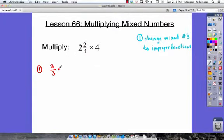And we're going to multiply that times 4 over 1, because 4 is the same thing as 4 over 1. We need to have a numerator and denominator when we multiply fractions.